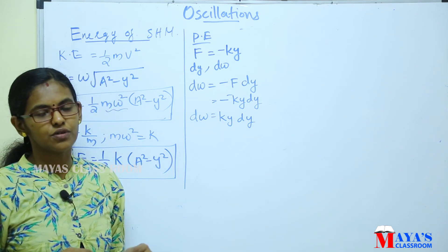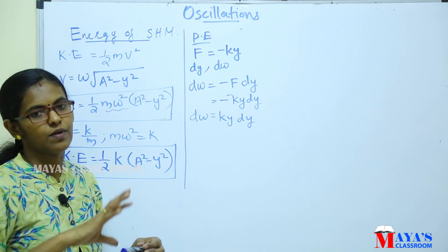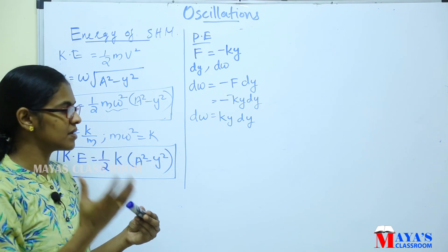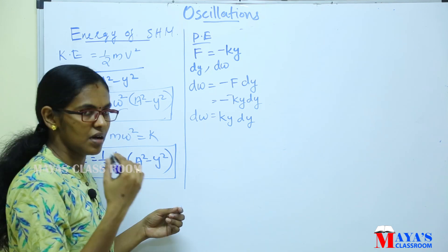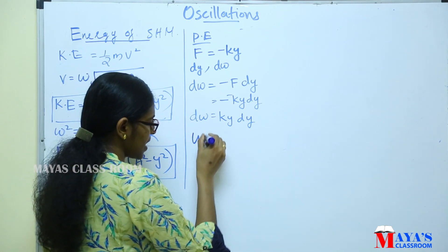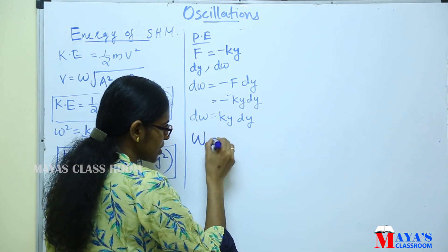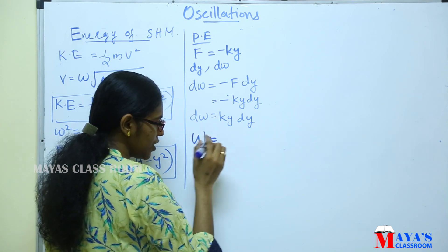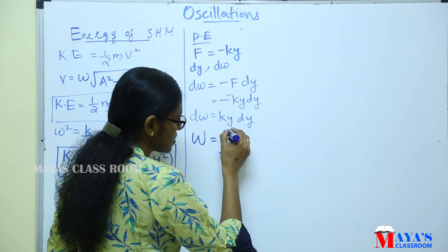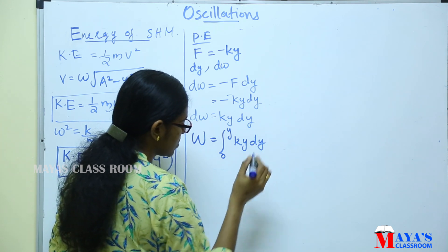Now, the total work done to displace a particle from 0 to y. I am going to integrate the total work done W. On the left side, I integrate W; on the right side, I integrate from 0 to y of k·y dy.